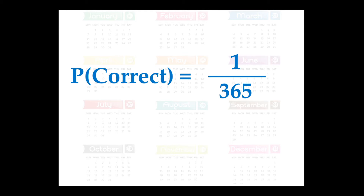There's one day for that person's birthday. So the probability that you guessed correctly is 1 out of 365 days, which is approximately 0.0027.